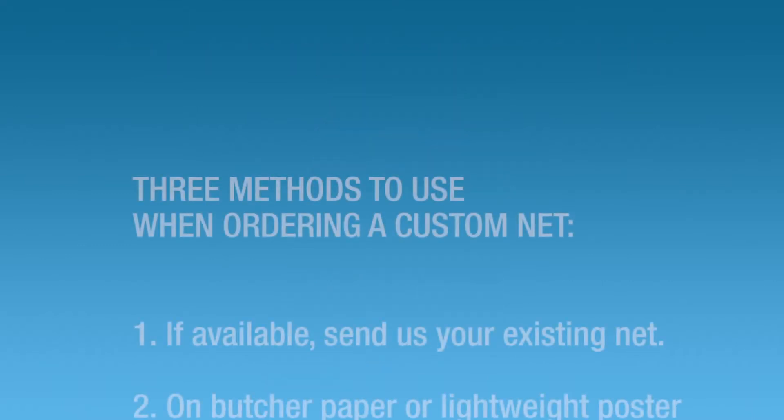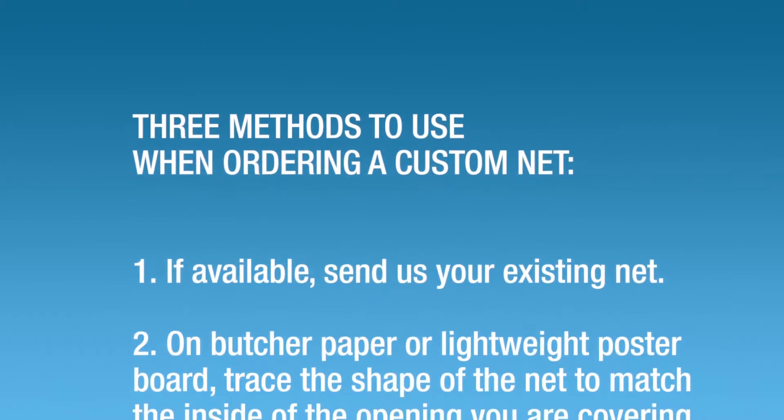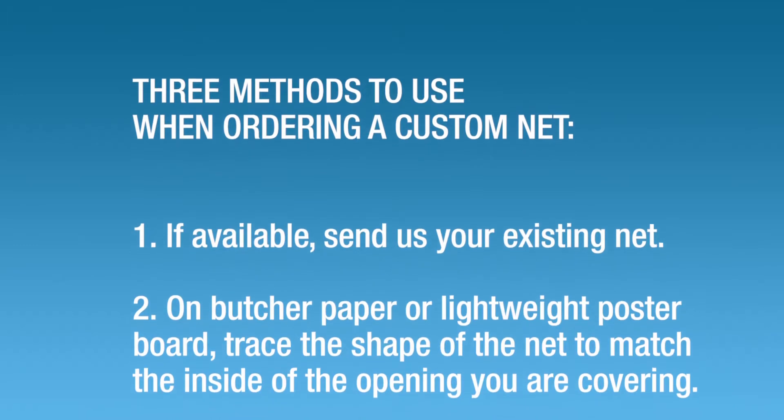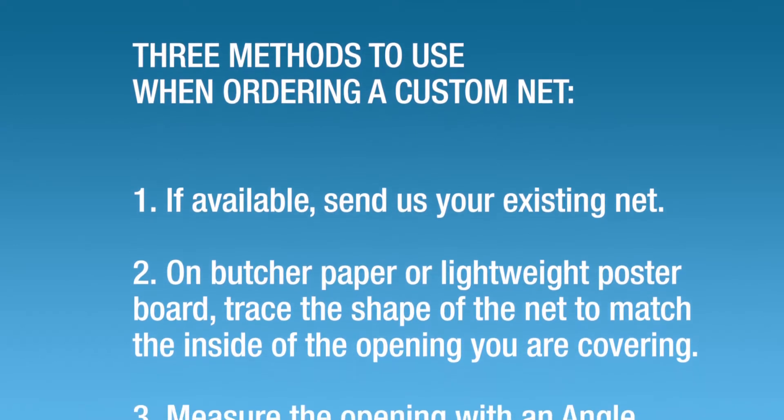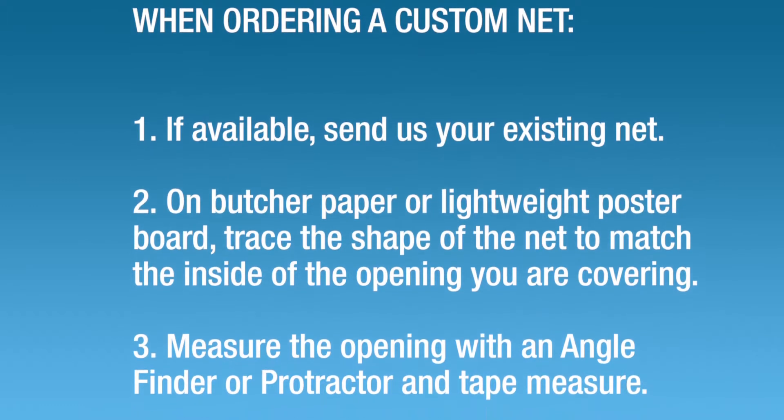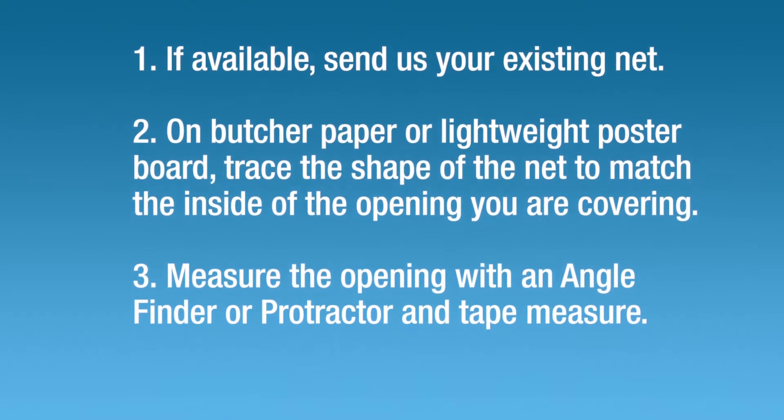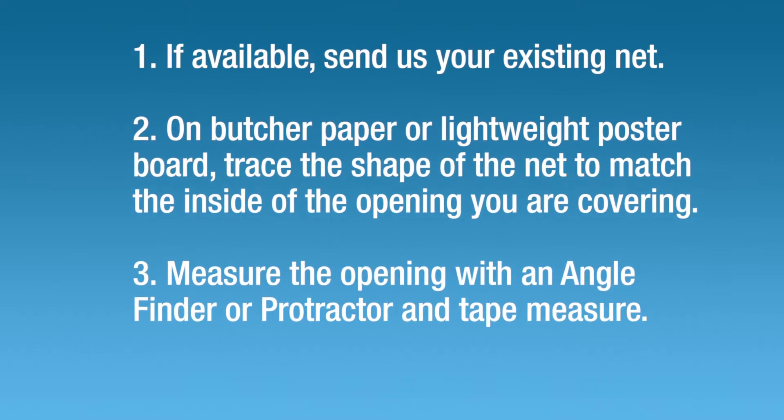There are three methods to use when ordering a custom window or door net. If available, send us the existing net that you are replacing. We will reuse your existing buckles if they are in good condition. Using butcher paper or lightweight poster board, trace the dimensions and shape of the net to match the inside opening you are covering. Or, measure the opening with an angle finder or protractor and a tape measure.